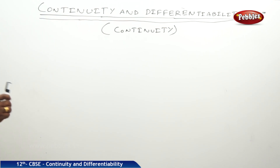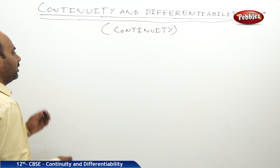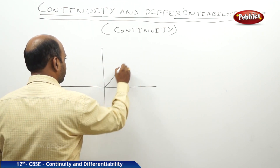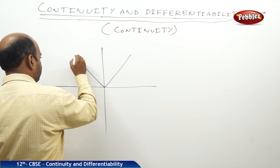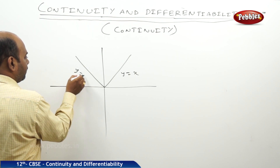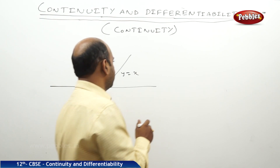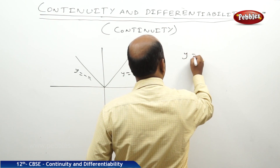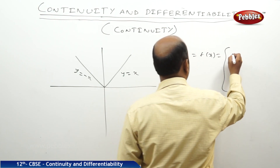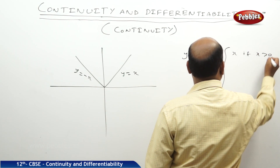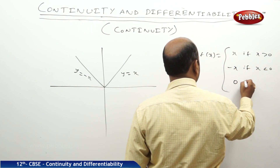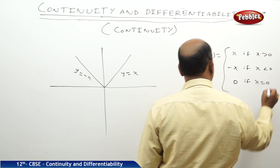Before taking up the definition, I would like to give a small example. This is a straight line passing through a region given as y = x, and this is given as y = −x. I define the function like this: y = f(x) = x if x > 0, that equals −x if x < 0, and that equals 0 if x = 0.